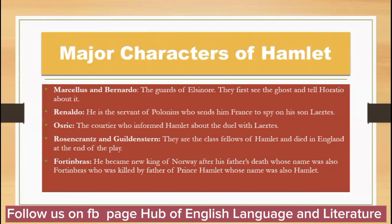The scene then changes and Horatio and the others come to meet Prince Hamlet. Hamlet is very happy to see Horatio and asks why he has come. Horatio says he came to attend the late king's funeral. He then tells Hamlet there is an important matter to discuss. Horatio tells Hamlet everything about the ghost. Hamlet decides he will go with them one night to see if the ghost appears, and if it does, he will try to speak with it.